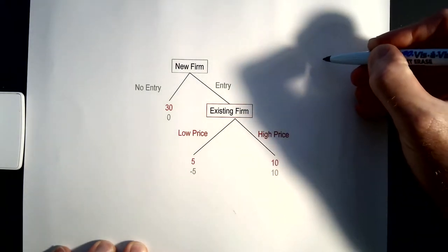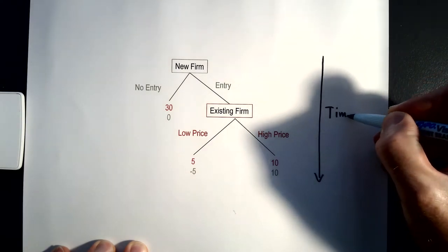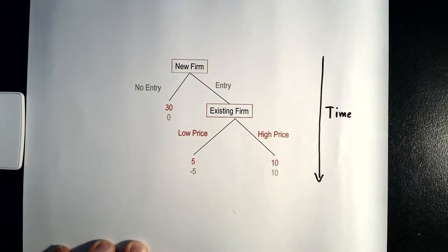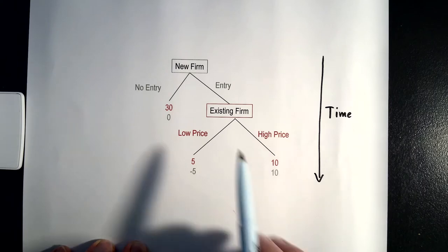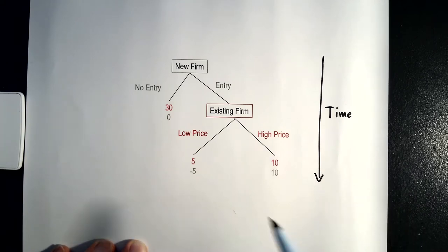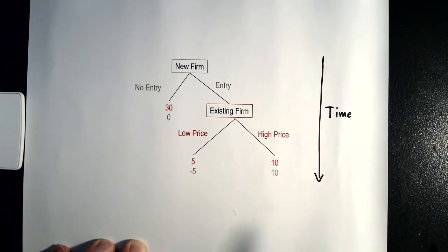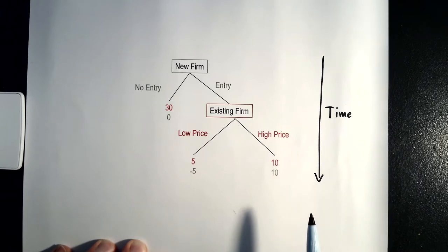We have a time component and time moves from top to bottom. Now suppose that you are the existing firm in the market and you know that there's a new firm about to enter. What you may say is that in order to deter the new firm from entering the market, you may threaten a price war after entry of the new firm. Game theory allows you to see whether that is a credible threat or not.